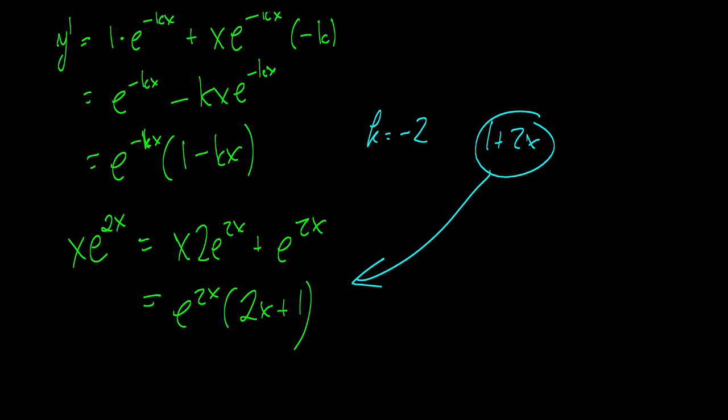So that was the three basic rules: product rule, quotient rule, chain rule. You can pretty much differentiate everything now except for trig, which we will cover in the next video.